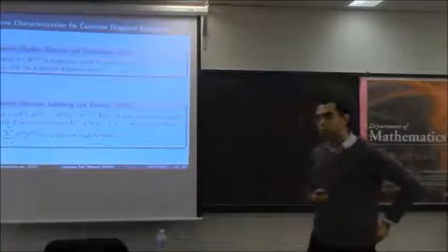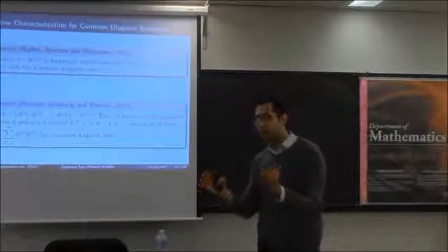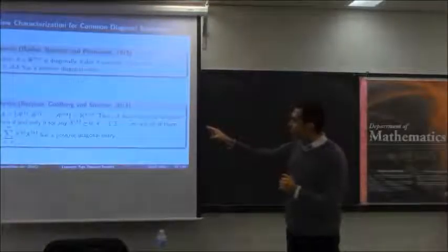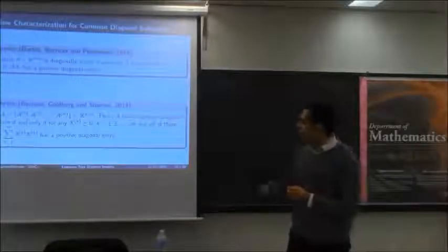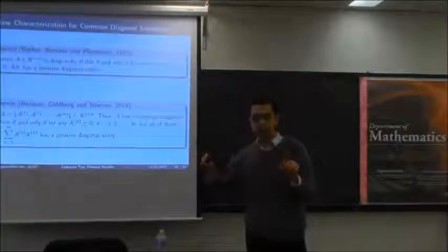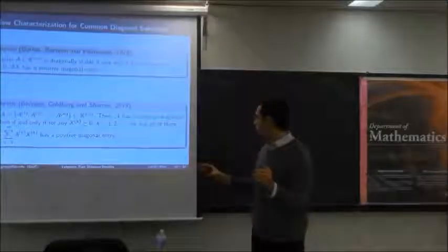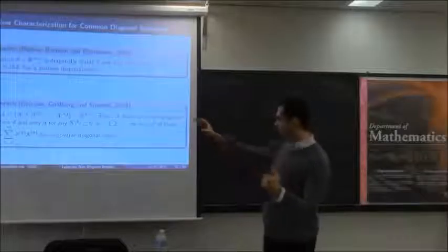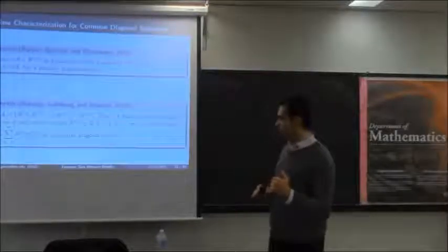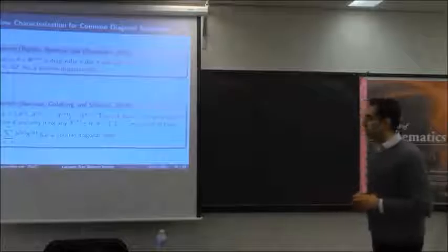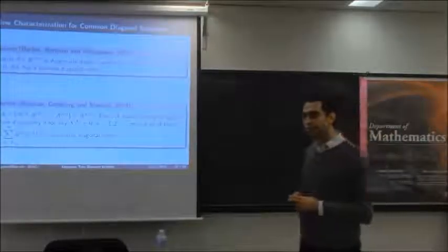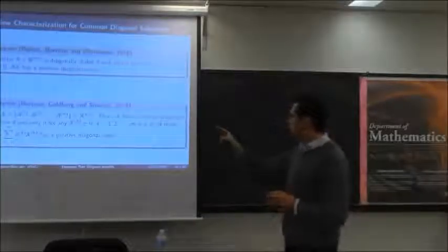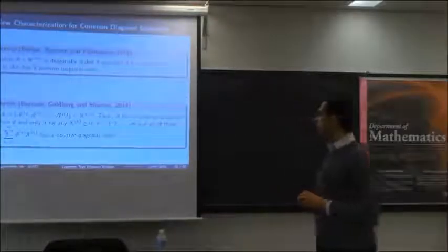This result is expanded for a set of matrices to share a common diagonal solution. Now this set A has a common diagonal solution if and only if we have M matrices, so we choose M positive semi-definite matrices, not all of them zero. For arbitrary positive semi-definite matrices, the summation A_K X_K has a positive diagonal entry. If this is the case, the matrices in this set have a common diagonal solution.